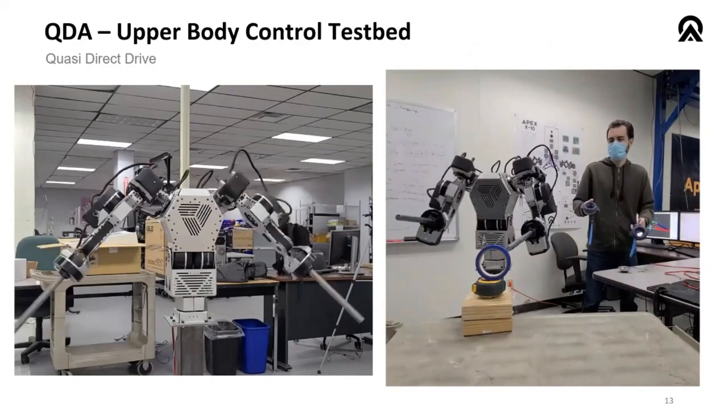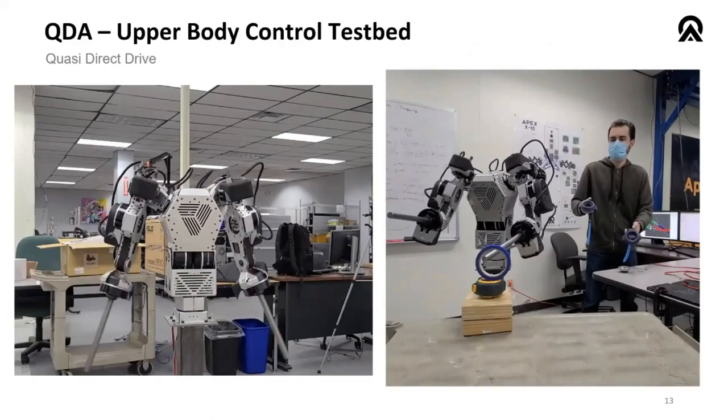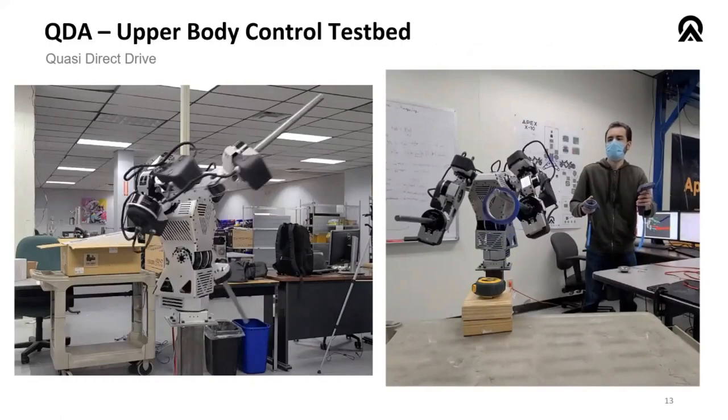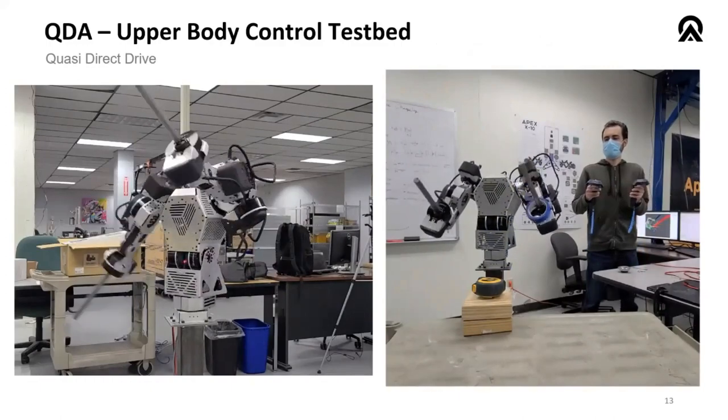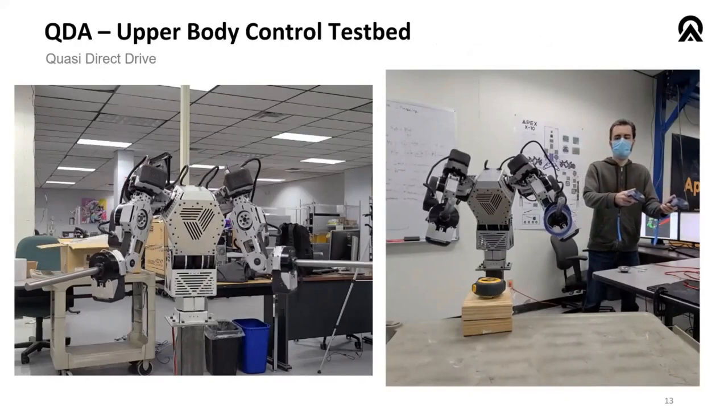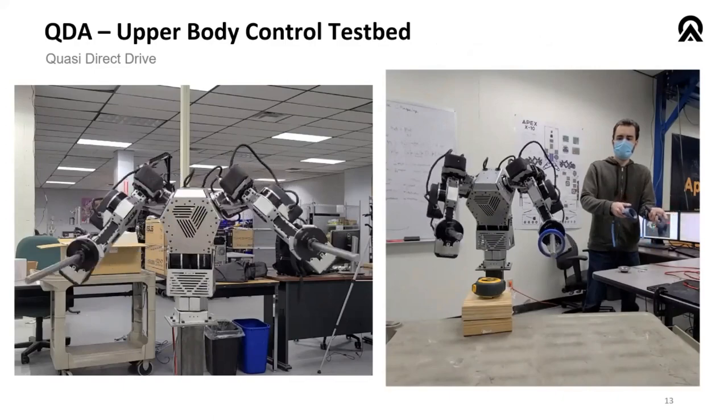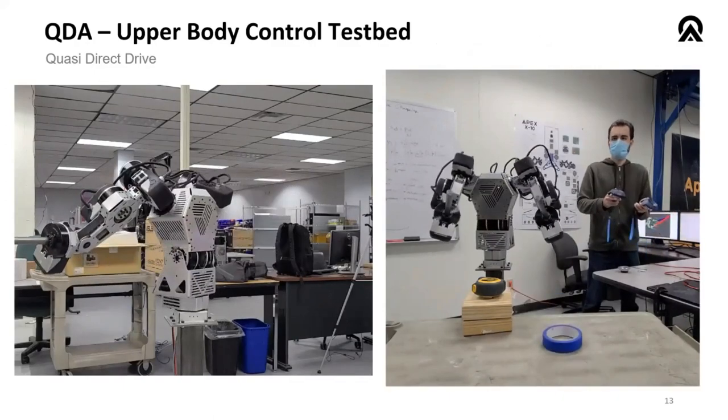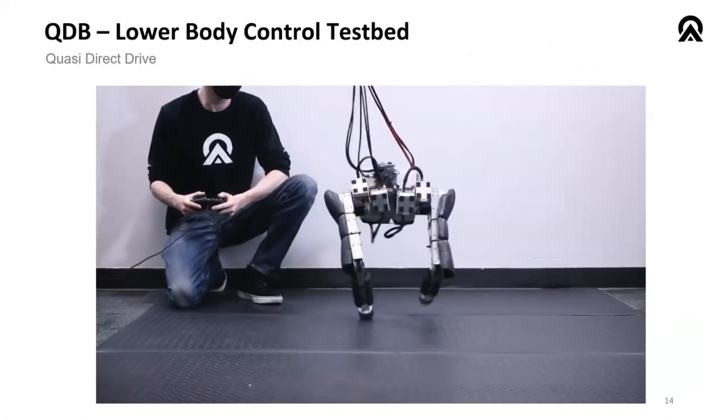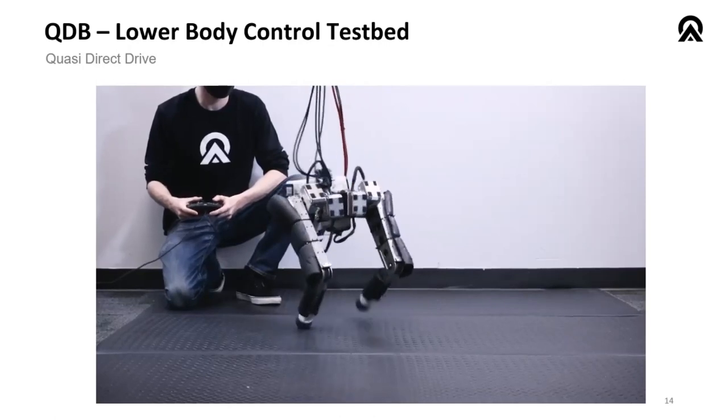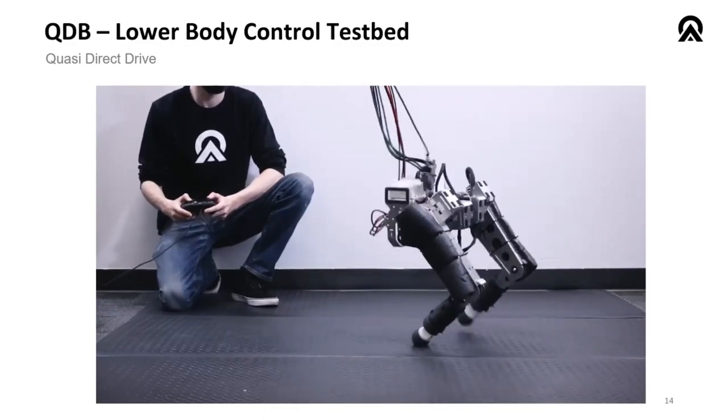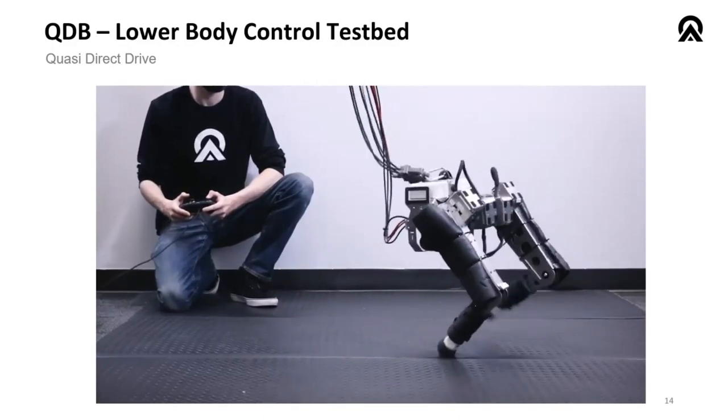And then moving on to quasi direct drive, I think this is an architecture that many people here are probably familiar with. But this is used in an upper body torso in this video here. This is a test bed that we built really as a quick controls test bed for developing algorithms showing that we can pick up rolls of tape with a teleoperator. And then of course, quasi direct drives have found a lot of use in legged applications. This is a six degree of freedom biped that we built as, again, another controls test bed. And I'll talk more about this in just a moment.